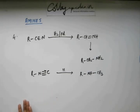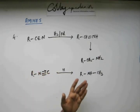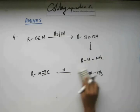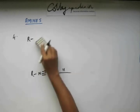So this is simple hydrogenation. Cyanide will give you 1 degree amine. If you have isocyanide like this, this will give you 2 degree amine. So let's quickly solve a small problem.